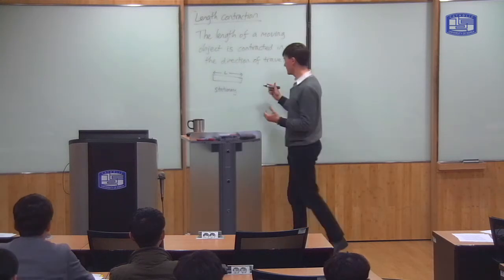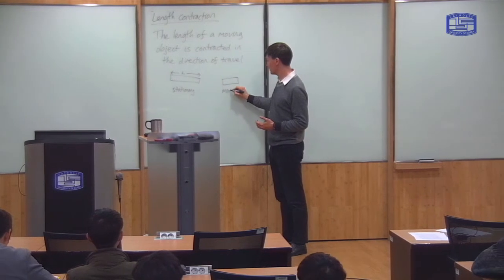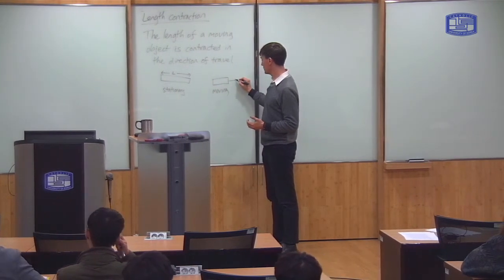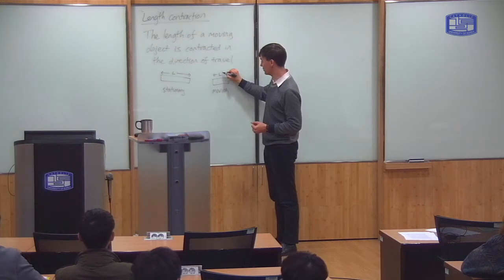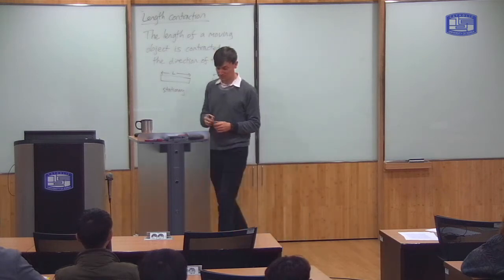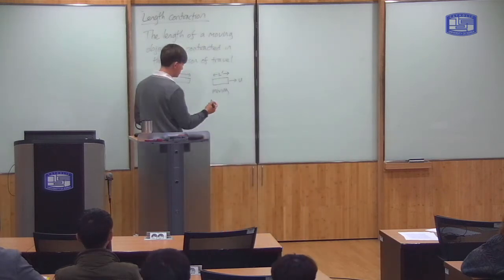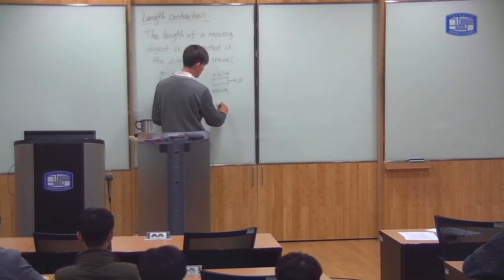Now if the same object is moving with some speed U, then its length appears to be shorter. So we'll call the new length L prime. So we can relate the two by saying that L prime is equal to some constant alpha times L.